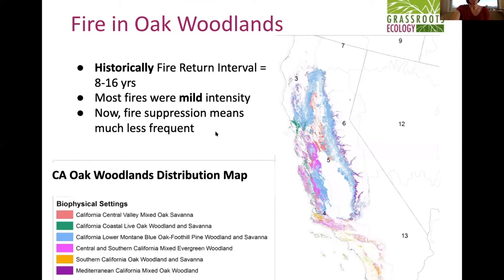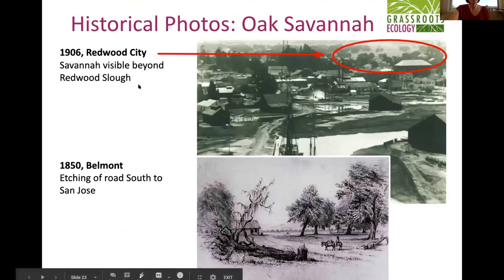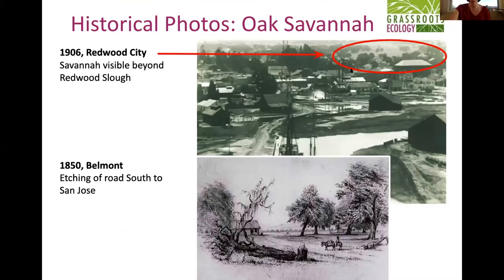Historically the fire return interval in oak woodlands would be every eight to sixteen years. Oak savanna — slightly different — could have fires as often as every year depending on how it was being managed by native people. Most fires historically in this habitat were majority mild intensity, but with fire suppression over the last hundred years, if a fire came through now it would be quite intense.